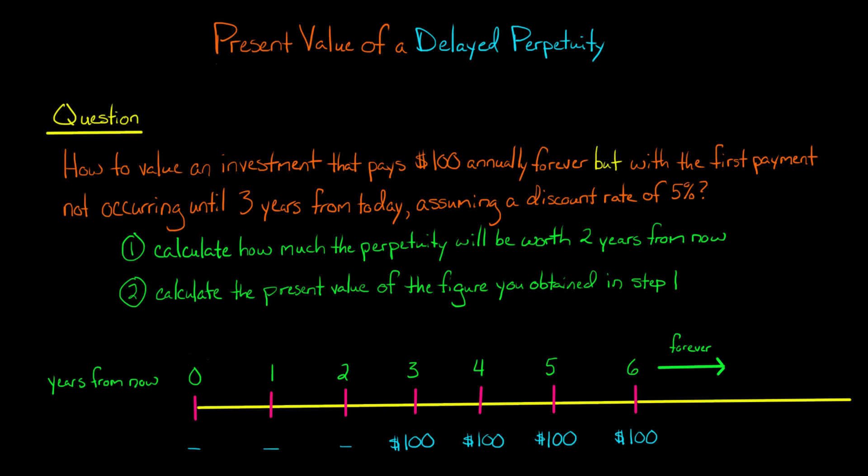In this video, I'm going to show you how to calculate the present value of a delayed perpetuity. So let's say you're trying to value an investment that's going to pay $100 every year forever, but the first payment isn't going to occur until three years from today.